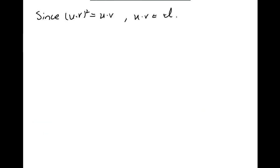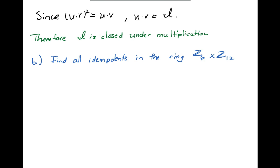Remind the reader what you've just shown them. Since uv squared is equal to uv, that means that uv belongs to I. Therefore I is closed under multiplication. Walk them back out and we're done with this problem.